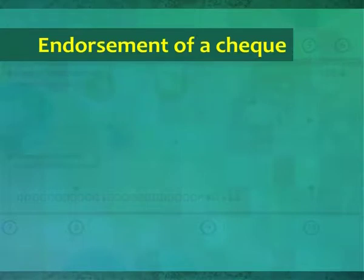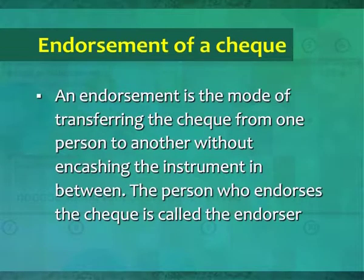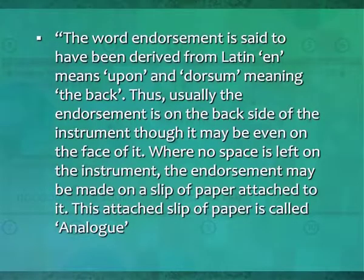An endorsement is a mode of transferring the cheque from one person to another without encashing the instrument in between. The person who endorses the cheque is called the endorser, and the person to whom the cheque is endorsed is called the endorsee. The word 'endorsement' is derived from the Latin 'en' meaning 'upon' and 'dorsum' meaning 'the back' — usually, the endorsement is on the backside of the instrument. When no space is left, the endorsement may be made on a slip of paper attached to it, called an 'allonge'.